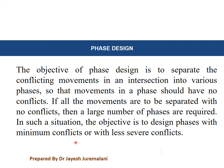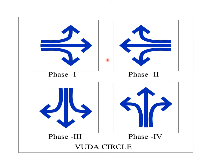Now, phase design. The objective of phase design is to separate conflicting movements at an intersection into various phases, so that movements in a phase have no conflicts. If all movements are to be separated with no conflicts, a large number of phases are required. In such situations, the objective is to design phases with minimum or less severe conflicts. At a four-approach intersection, each approach has three movement types: left-turning, straight, and right-turning traffic — totalling 12 movement types.